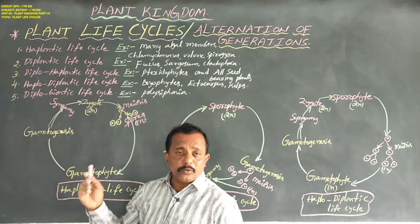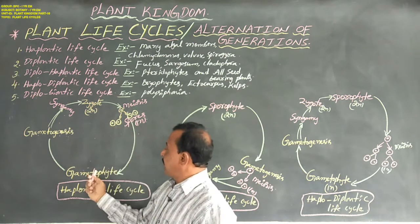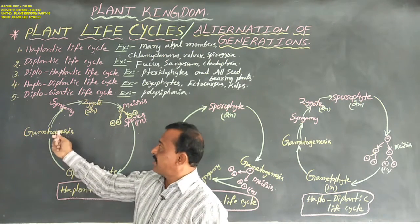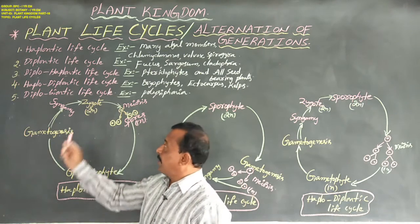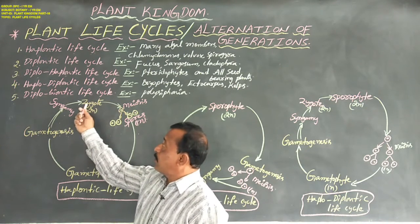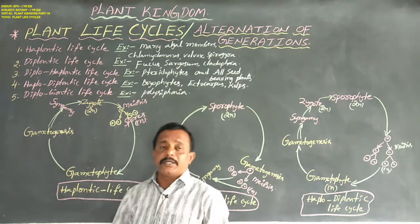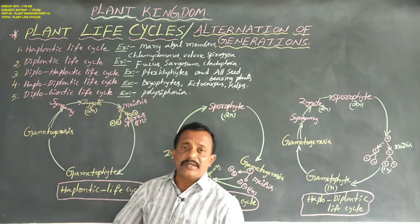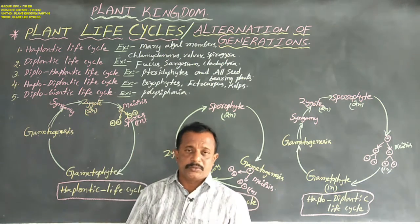In this haplontic life cycle, haploid number of chromosomes are present in: spores, gametophyte, gametes — that is gametogenesis. But diploid number of chromosomes are present in only one stage — that is the diploid zygote.